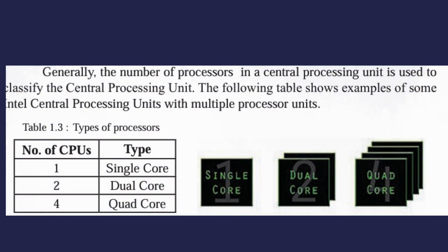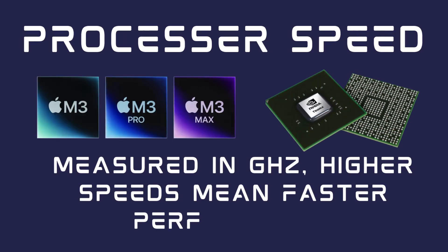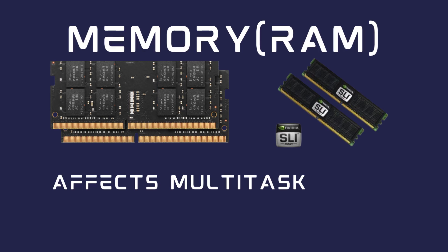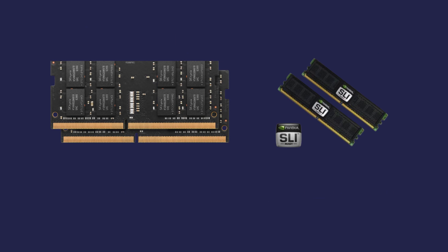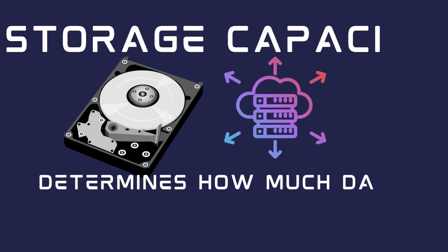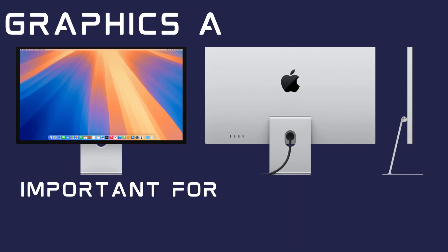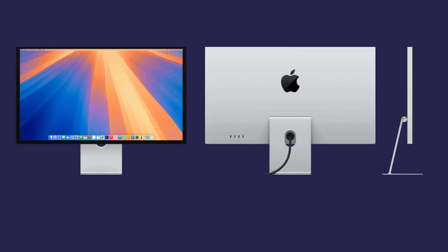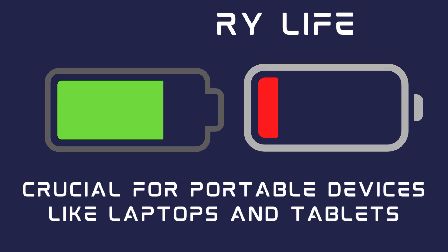When buying a computer, we must consider its specifications, such as processor speed — measured in GHz, where higher speeds mean faster performance. Memory, or RAM, affects multitasking and application speed. Storage capacity determines how much data we can save. Graphics and display are important for gaming, design, and video editing. Battery life is crucial for portable devices like laptops and tablets.